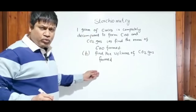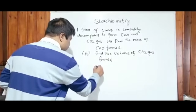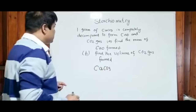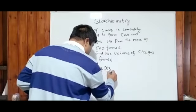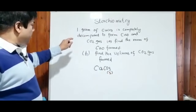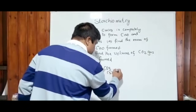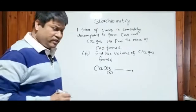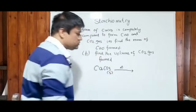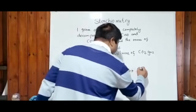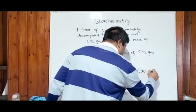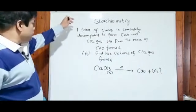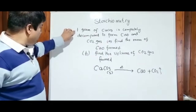Calcium carbonate (CaCO3), which is a solid, is completely decomposed just by heating it — there's a symbol for heating. After heating we are left with a solid which is calcium oxide, and carbon dioxide gas is liberated. Now I want to read the question one more time: one gram of calcium carbonate is given.